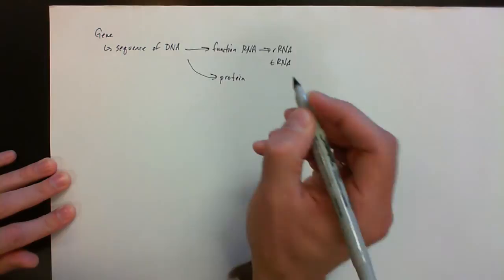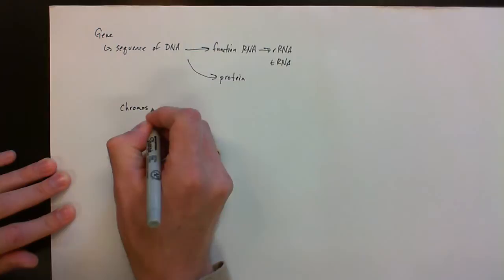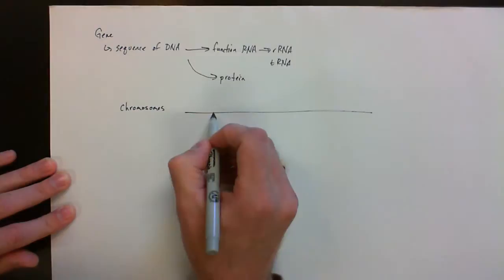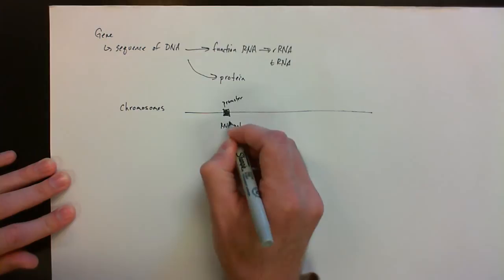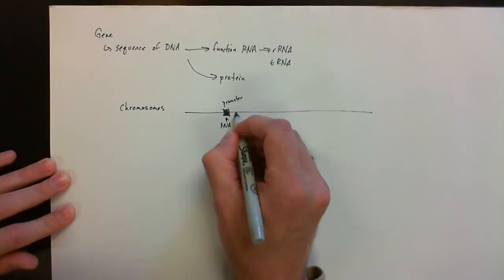So these genes are going to be found on chromosomes, and essentially they're going to be made of a couple components. If we draw it kind of in a linear form here, we are going to have a promoter. The promoter is where you're going to see RNA polymerase bind. And then you're going to have essentially a start site, and this start site is for transcription.